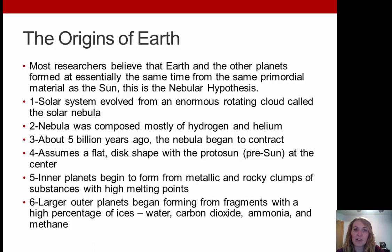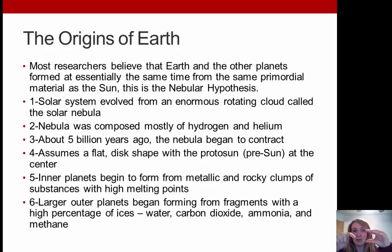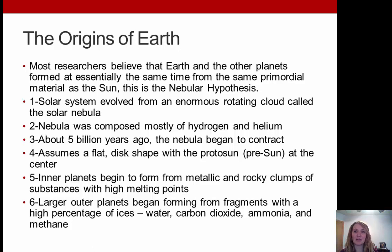About five billion years ago the nebula began to contract, forming a flat disk-like shape with a proto-sun — a pre-sun — in the middle. The inner planets began to form from rocky metallic clumps with really high melting points, while the outer planets began forming from fragments with a high percentage of ice, water, carbon dioxide, ammonia, and even methane.